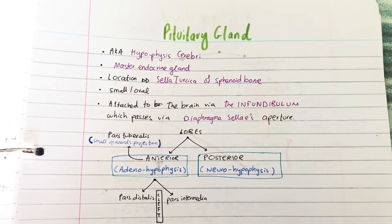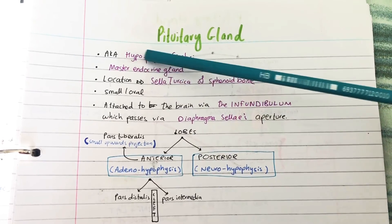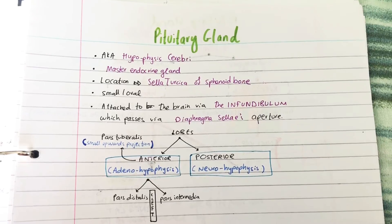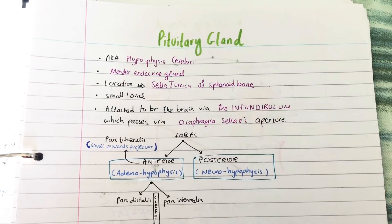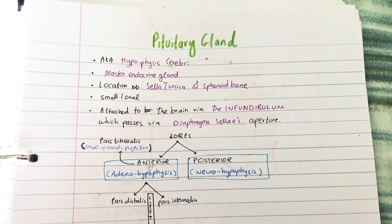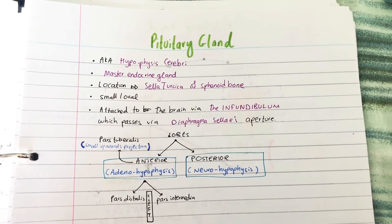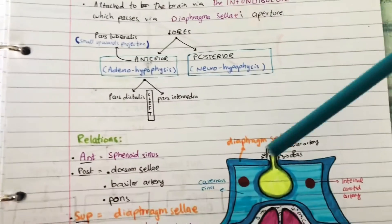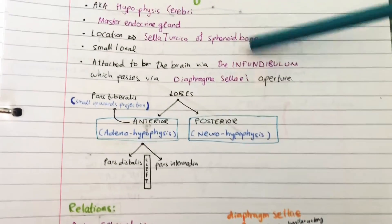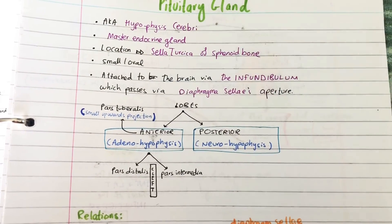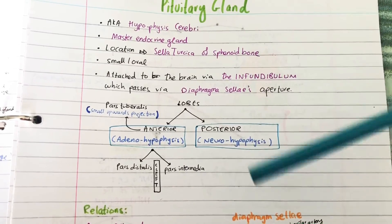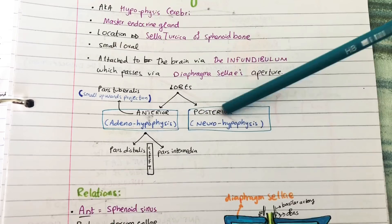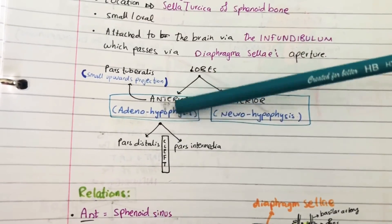Basically the pituitary gland, also known as the hypophysis cerebri because it is beneath the brain, is the master endocrine gland. Its location is in the sella turcica of the sphenoid bone and it is small and oval. It is attached to the brain via the infundibulum and it has two lobes: an anterior lobe and a posterior lobe. The anterior lobe is also divided into two further parts, the pars distalis and the pars intermedia.